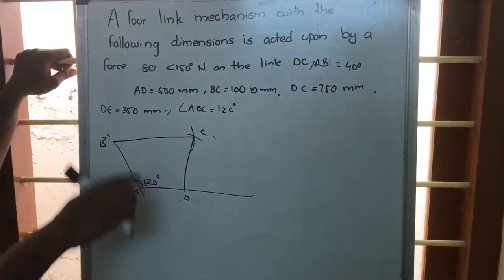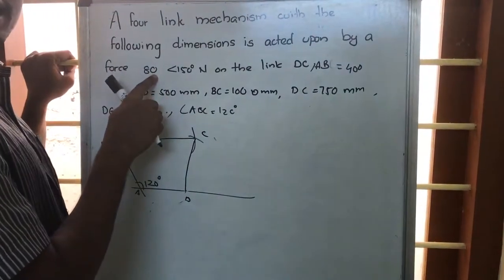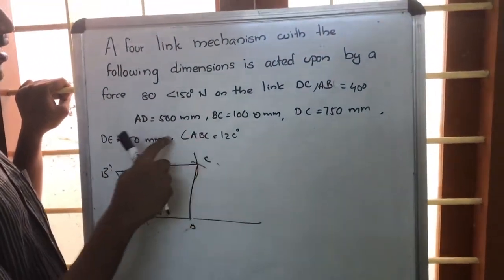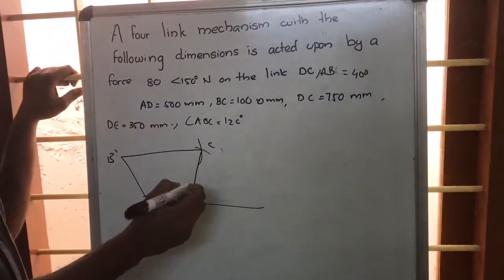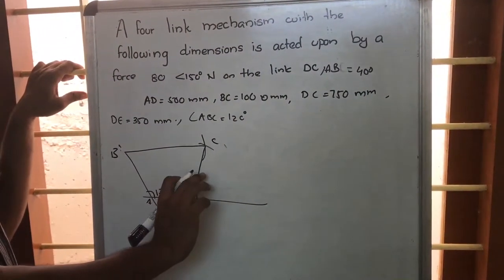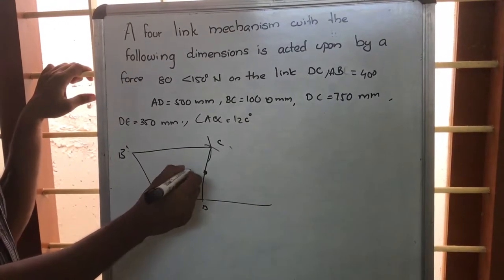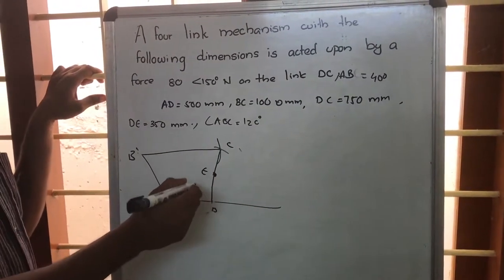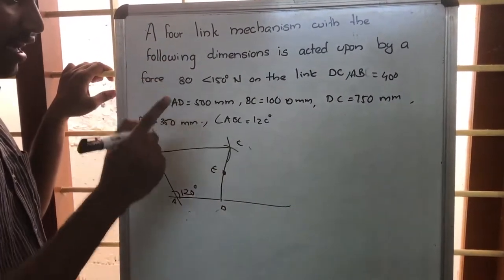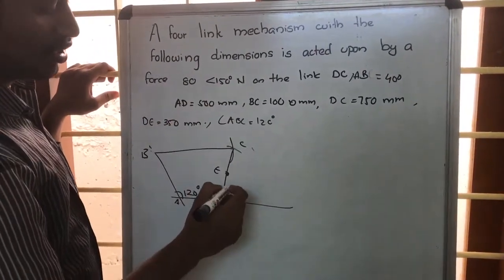Now, it is given that a force of 80 Newton is acting at 150 degrees at point E. E is at 350mm from D, so from here measure 3.5 centimeter to get point E. A force is acting at E making 150 degrees with the horizontal.